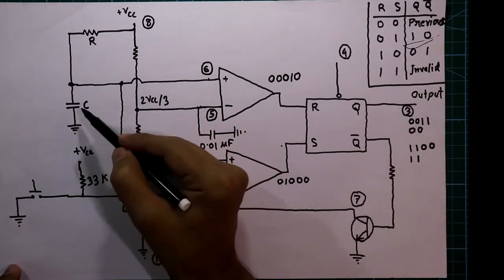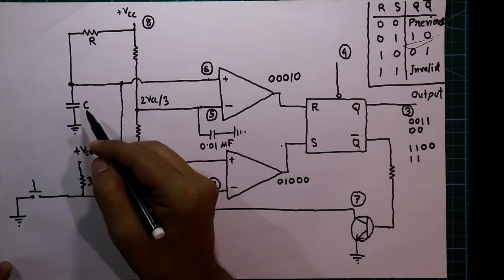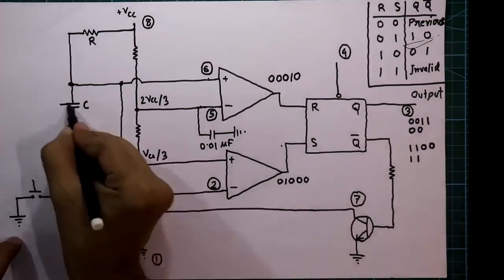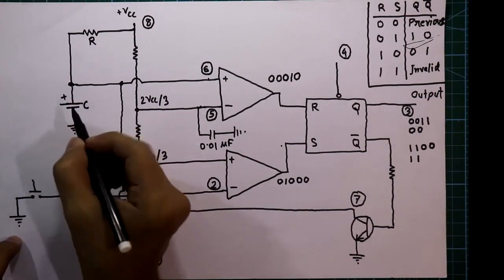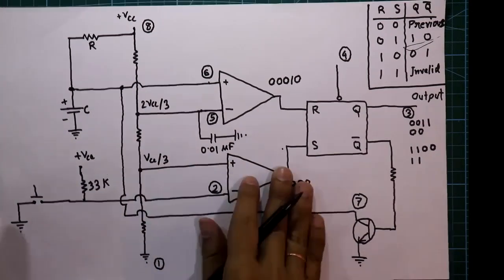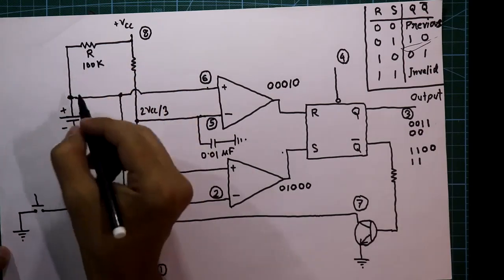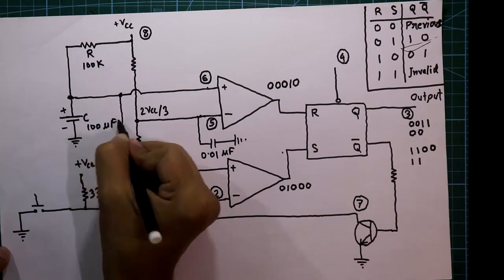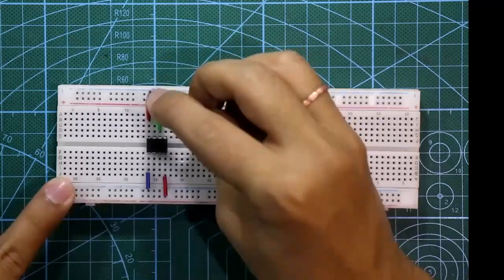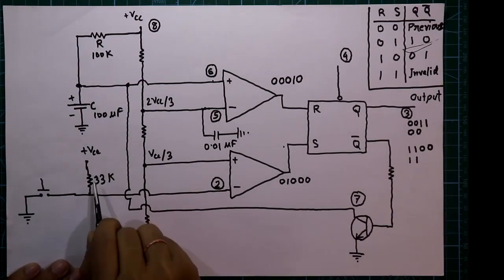A capacitor C is also connected — the value of C could be anything. I am going to connect a 100 microfarad electrolytic capacitor. The positive pin is connected here and the negative pin is connected to ground. The resistor value is 100 kilohms and the capacitor is 100 microfarad.